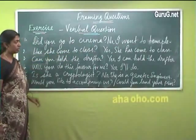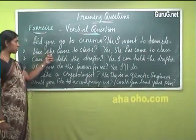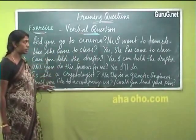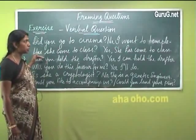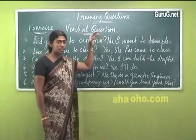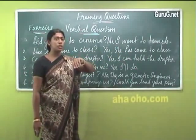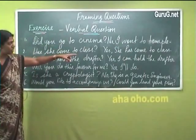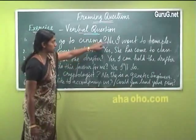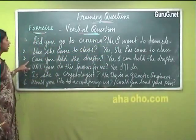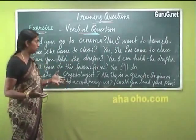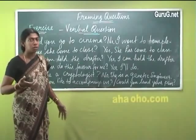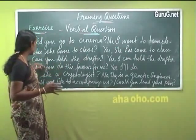'Has she come to class?' — the question starts with the perfect tense auxiliary 'has' because the subject is third person singular. The teacher might ask this to the class. If she had come, the students would say 'Yes, she has come to class.' If she hadn't come, they would say 'No, she hasn't come to class.' All questions that start with verbs take either yes or no at the beginning of the answer.